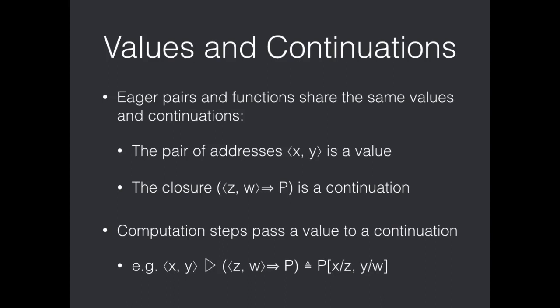And I've written down here what the particular case of eager pairs and functions use for their value continuation matching. Where if we match the pair x, y with the continuation z, w goes to p, well, we continue with p but substitute x and y for z and w.